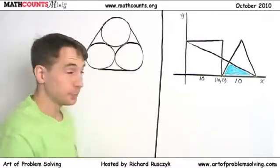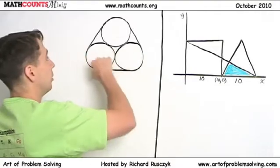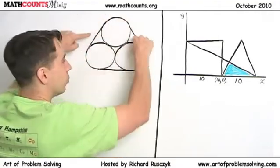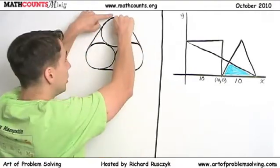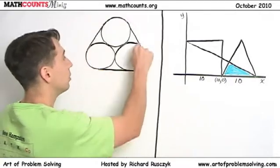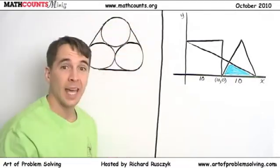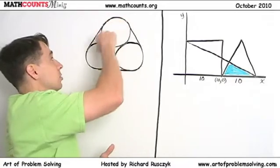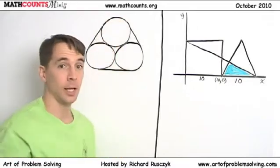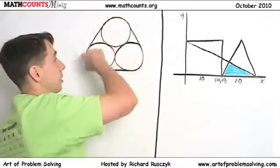So, here's our first problem. We have three circles here, and we have a band wrapped tightly around them. Band goes all the way around, straight on the edges, and then it goes around the curves of the circles. And each of the circles has radius 10. And the question is to find the length of the band.